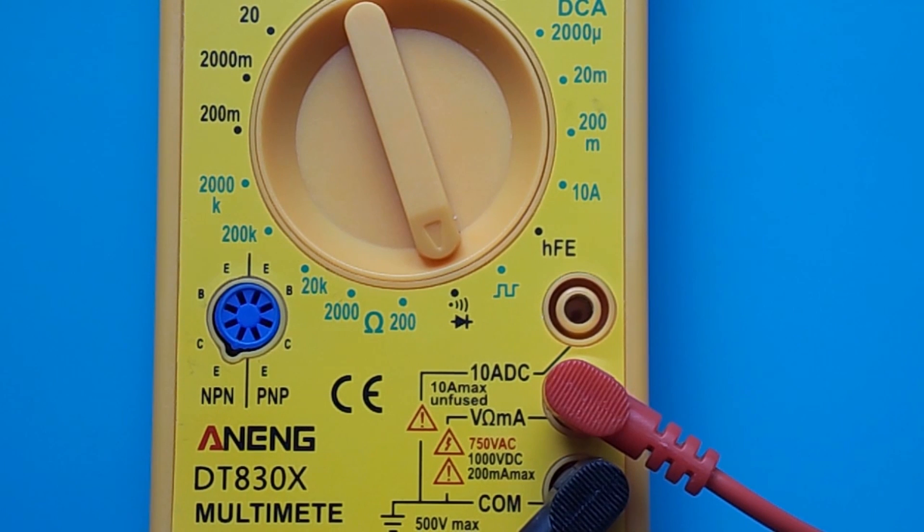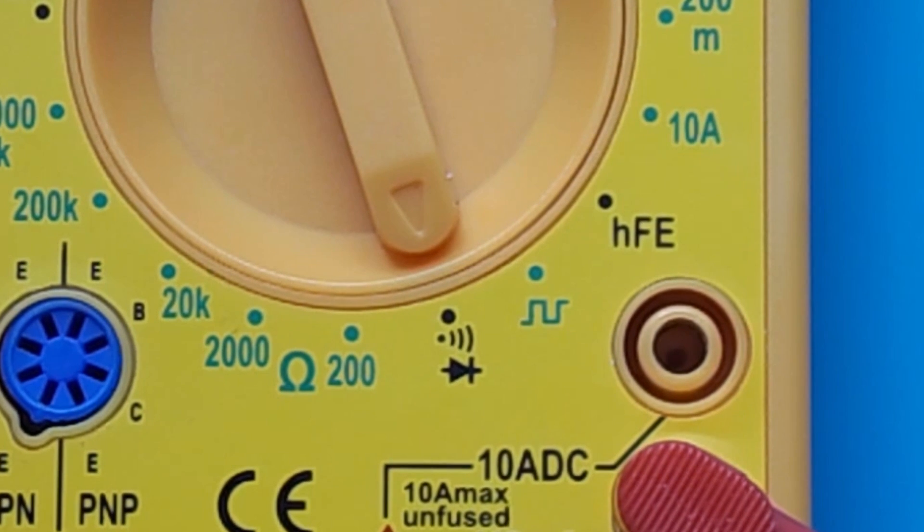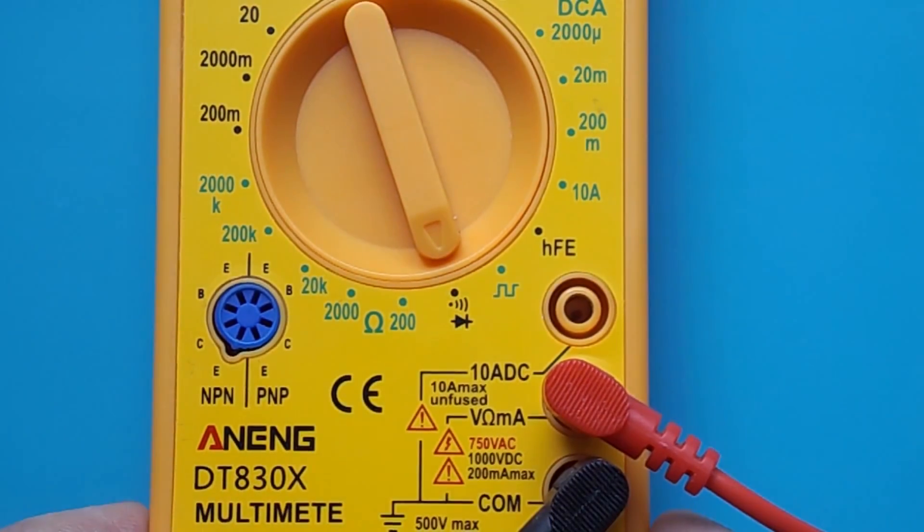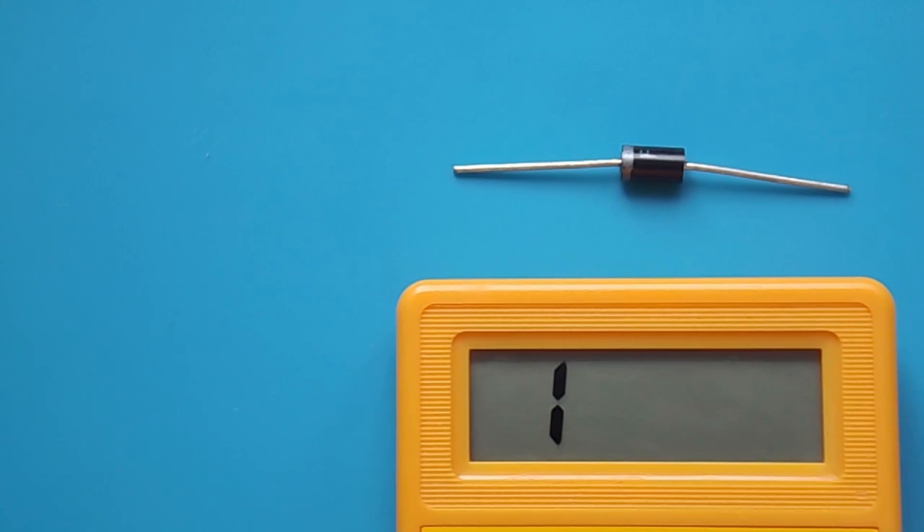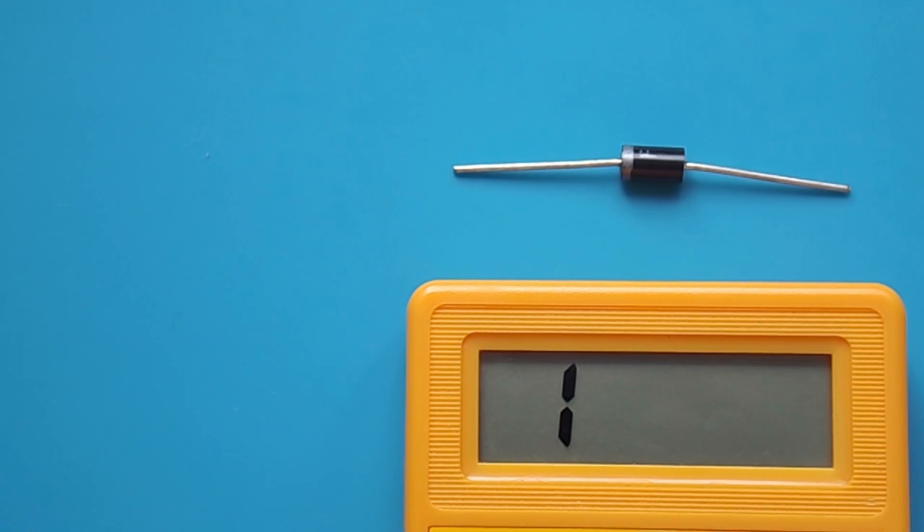Before checking the diode bridge, the multimeter must be set to diode test mode. If it is not there, then you can put the usual check of resistors. But it will only show a short circuit of the diodes.